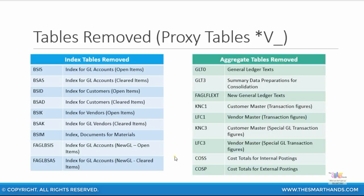Another major difference between SAP ERP and SAP S4HANA is the removal of tables such as index tables, aggregate tables, and some line item tables. Now, these are not completely gone from S4HANA. However, they have something called a proxy table, and sometimes the table name starts with V underscore and the table name — for example, V_COEP, or if it's a fixed asset table, it could be FAA_V_ANEP, and so on.